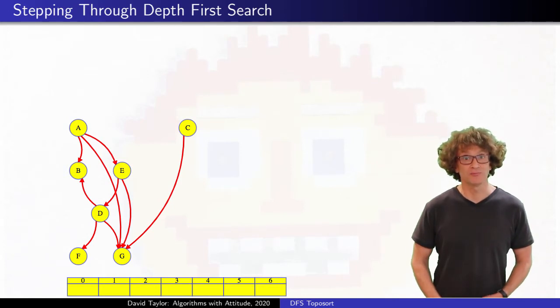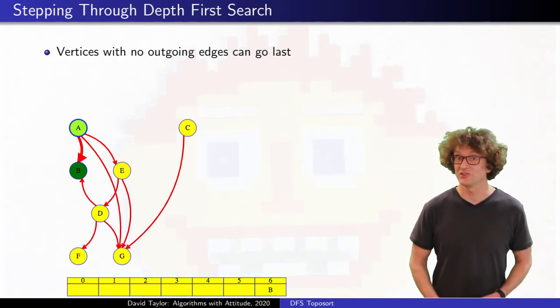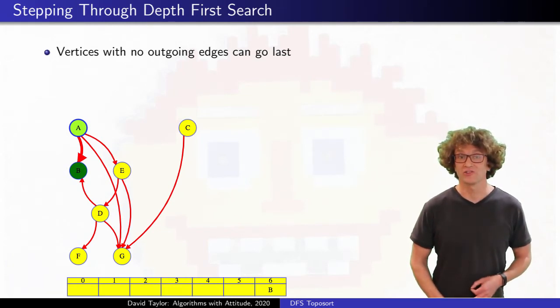If we run depth first search alphabetically, we start with vertex A, and then we find vertex B along a tree edge, which I will leave thick red like in the depth first search videos. B has no outgoing edges, so it can go last in our topological order. Our depth first search finishes B and returns to A, which has two other outgoing edges. If we want to, we can continue our depth first search looking for other vertices that have no outgoing edges, but let's stop for just a second, and think about what the edges from vertex A mean.